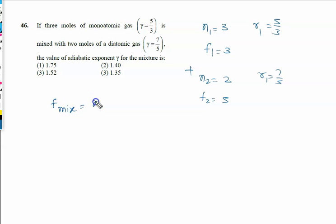known as n₁f₁ plus n₂f₂ upon n₁ plus n₂. So it is three into three, that is nine, plus two into five, that is ten